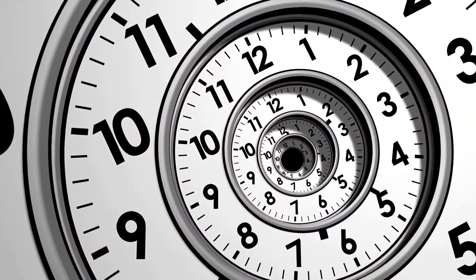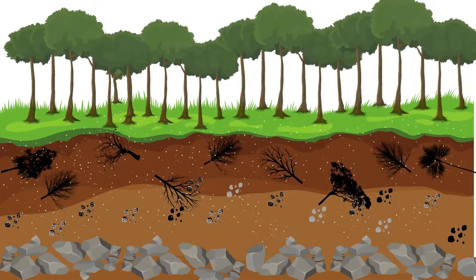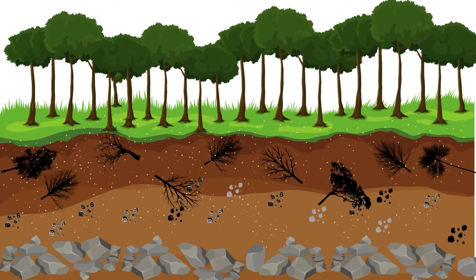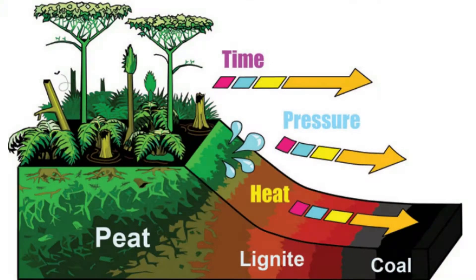As years passed, more and more plants died and many such layers were formed one above the other. As more soil got deposited over them, they were compressed. The temperature also rose as the dead plants sank deeper and deeper. Under high temperature and high pressure, the dead plants got slowly converted to coal.